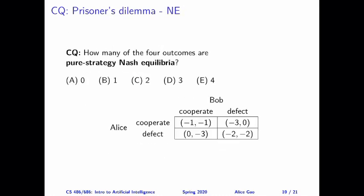The second question is regarding pure strategy Nash equilibria. Considering the four possible combinations of actions, how many of these four outcomes are pure strategy Nash equilibria? The correct answer is B — there is one pure strategy Nash equilibrium, and again it's defect and defect. So both people testify against each other, and they both need to serve two years in prison.